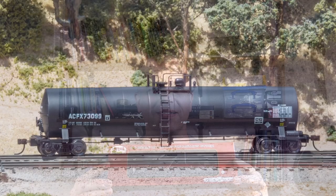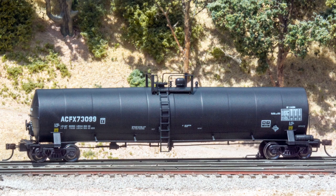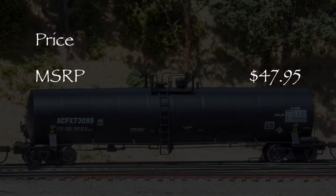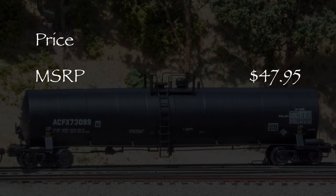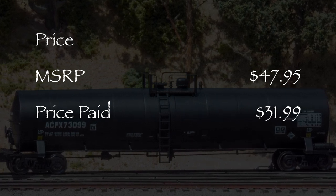Hi, I'm Dan Cordopassi. Today I'm reviewing an HO scale 23,500 gallon tank car from Atlas. My car is decorated for ACFX and stenciled for asphalt service. The MSRP for this car is $47.95. I paid $31.99 for my car at modeltrainstuff.com. We'll start the model at 100 possible points.